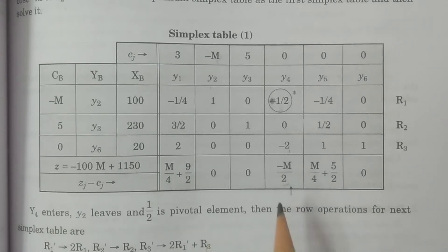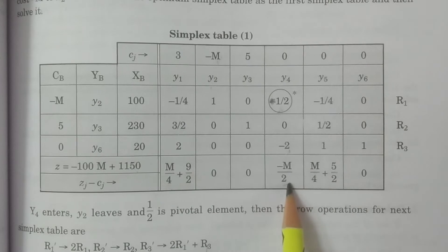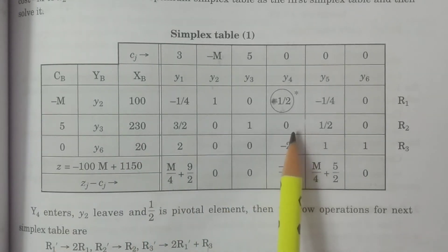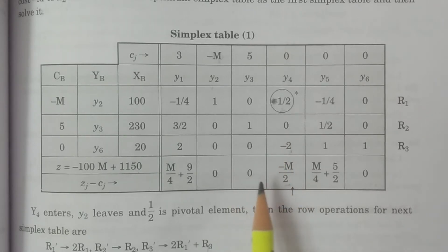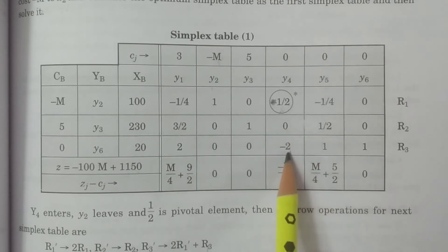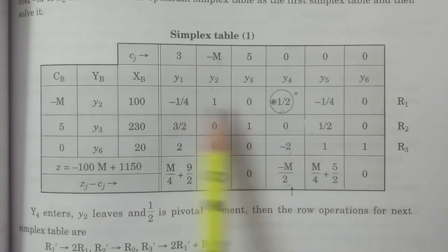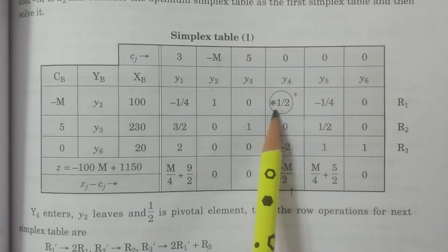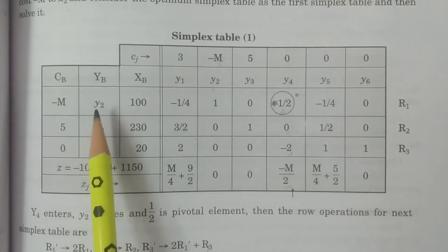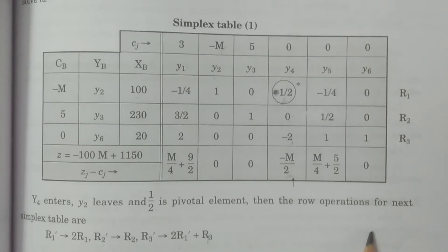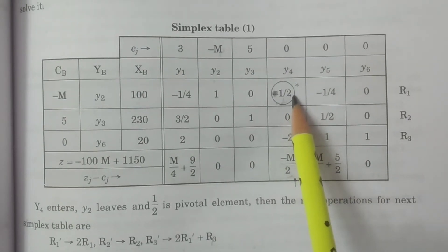Any negative value — the corresponding procedure will be further followed. Minus M by 2 is negative. The corresponding vector Y4 enters the basis. Which vector leaves the basis? Using the formula: minimum of XBi by YiR where YiR greater than 0. Here 1/2 is positive; the other values are negative or zero so they are excluded. So 100 divided by 1/2 — this is the minimum ratio. The corresponding vector is Y2, therefore Y2 leaves the basis. Y4 enters, Y2 leaves, and 1/2 is the pivot element.